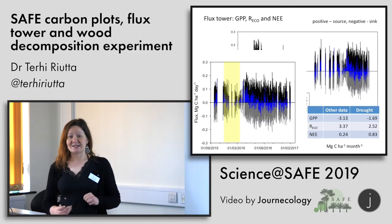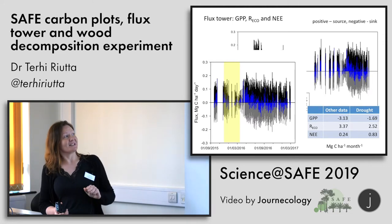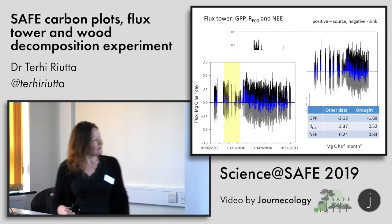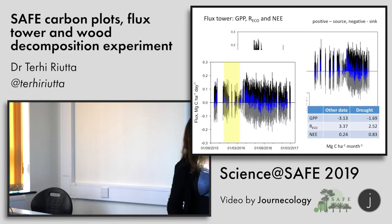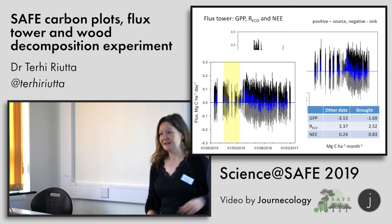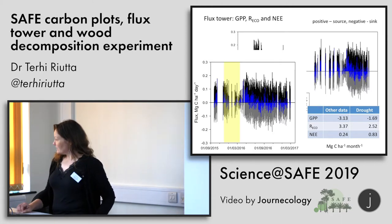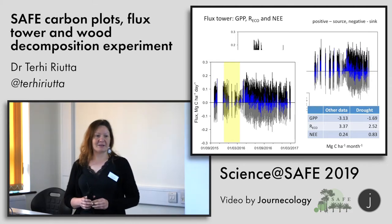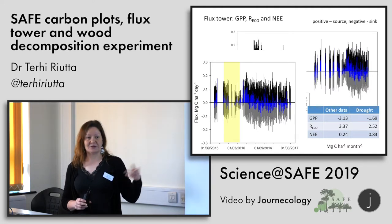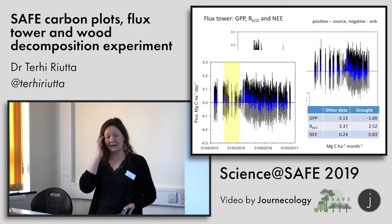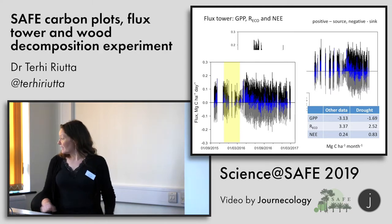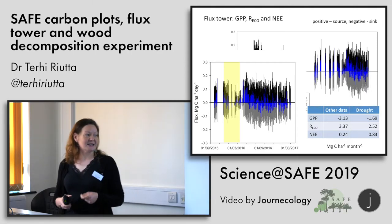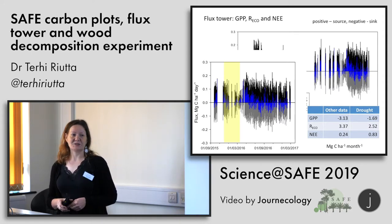Note that atmospheric scientists use the opposite sign convention from ecosystem scientists — positive values mean the system is a source, because the atmosphere is gaining carbon. Respiration is shown in black, photosynthesis in grey, and net ecosystem exchange in blue. Zooming into the better period from late 2015 to early 2017, we captured the peak drought with some gaps. The flux data agrees with plot measurements: both photosynthesis and respiration decreased, but because photosynthesis decreased more, the system became a larger source of CO2 to the atmosphere.